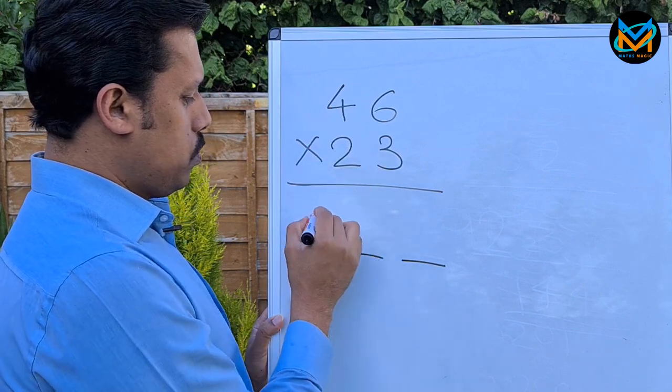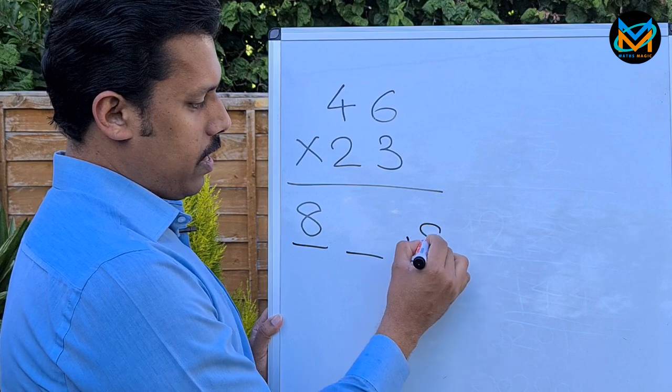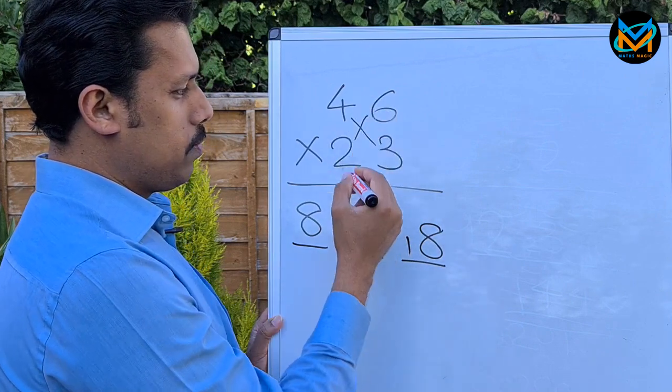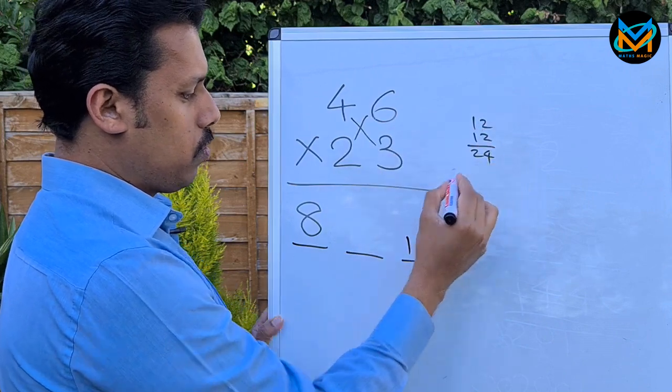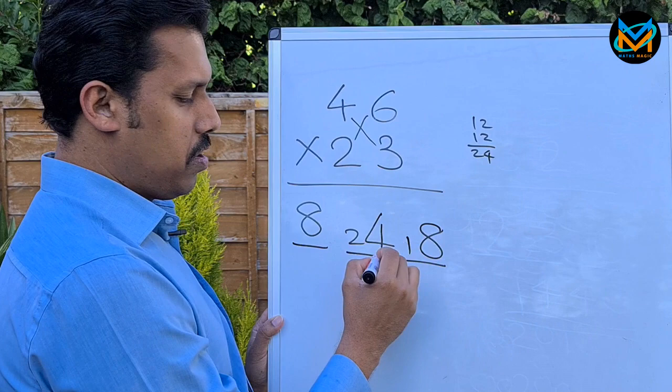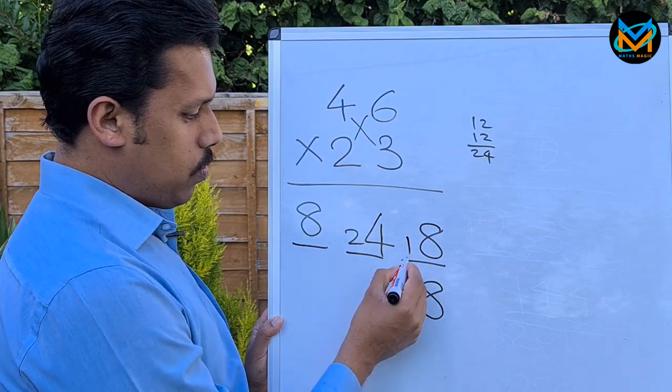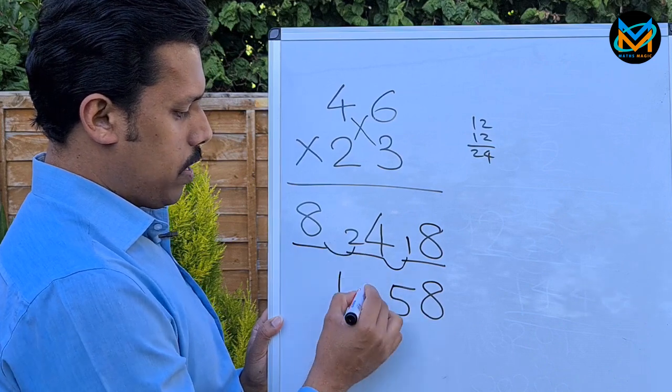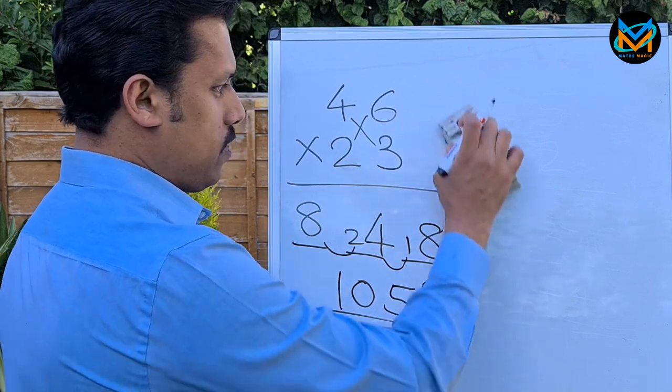4 into 2 is 8, 6 into 3 is 18. The middle number: cross multiply - 4 into 3 is 12, 6 into 2 is 12, so 24. The final answer: 8, add these two to get 5, add these to get 10, so 1058. Last example.